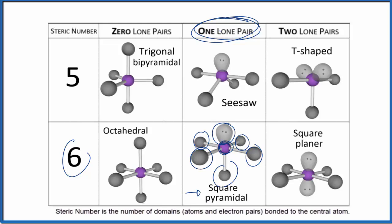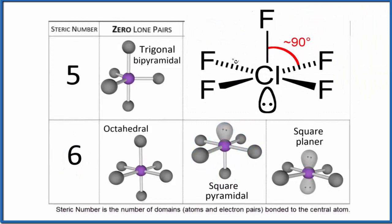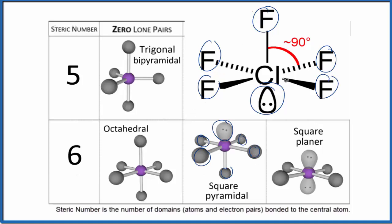A good example of this is ClF5. So for ClF5, we have our one lone pair here, that's this here, and then we have one, two, three, four, five atoms, these right here. They're bonded to the central atom. So ClF5, because it has those five atoms and one lone pair, it's square pyramidal.